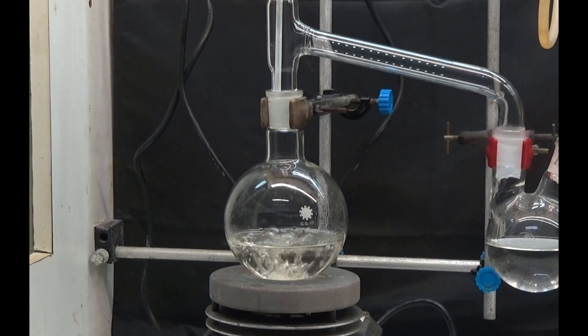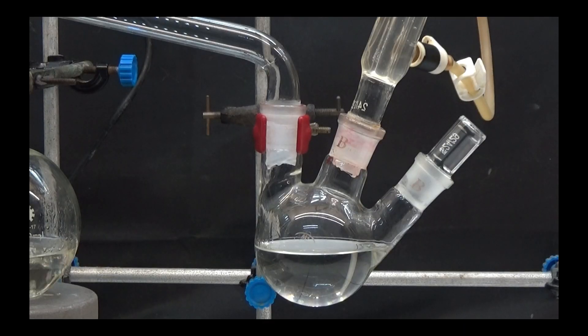First, we will heat the 500ml flask with a heat plate and distill most of the liquid. A significant amount of ammonia gas is produced during this distillation.